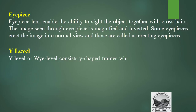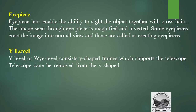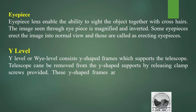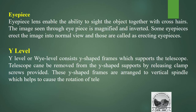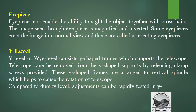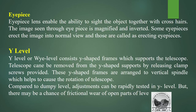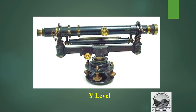Y level: the Y level consists of a Y-shaped frame which supports the telescope. The telescope can be removed from the Y-shaped support by releasing the clamp screw. These Y-shaped frames are arranged on a vertical spindle which helps rotate the telescope. Compared to the dumpy level, adjustments can be rapidly tested in the Y level, but there may be a chance of wear to the open parts of the level.